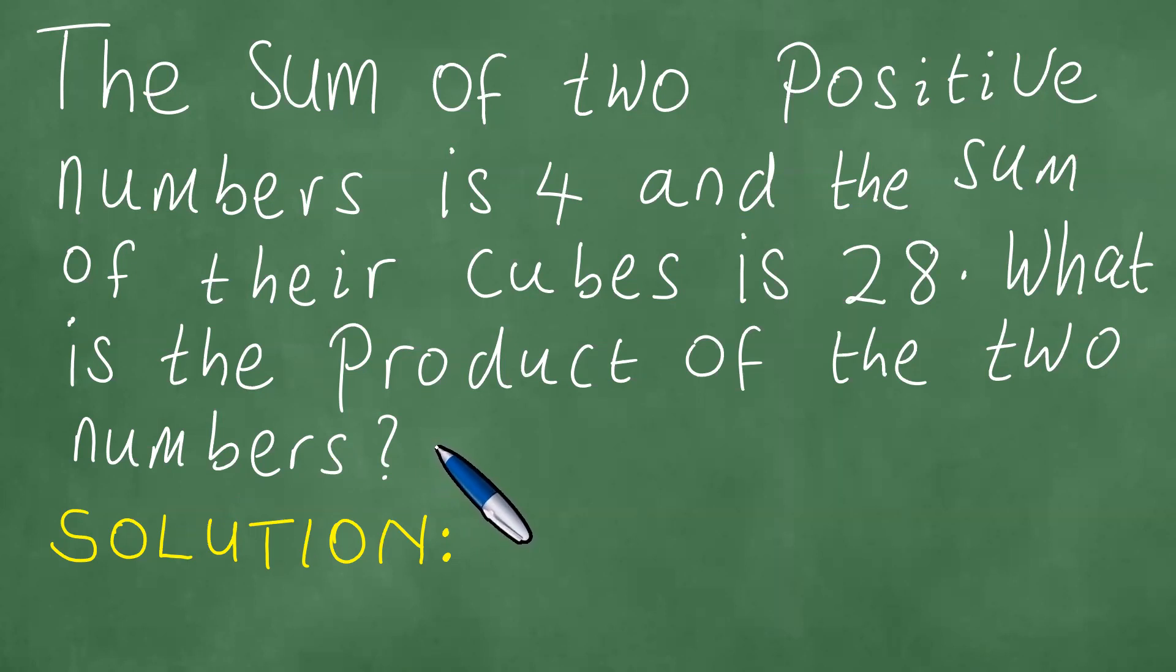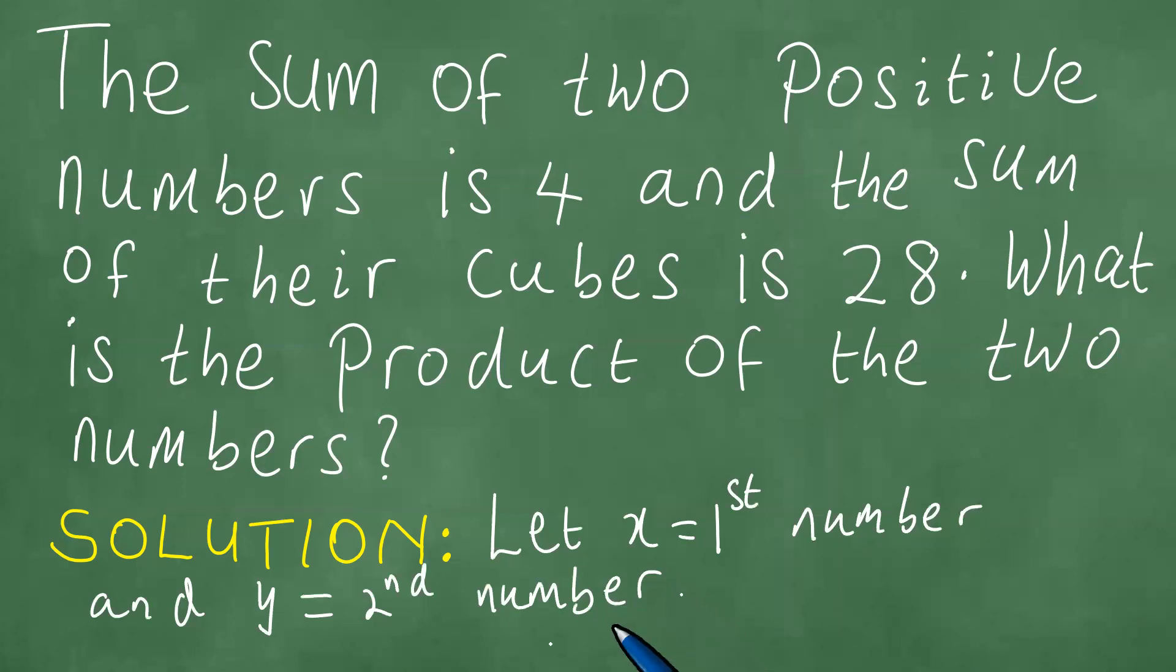To solve this problem in detail, there are a couple of things that we most certainly consider. In an attempt to find the product of the two numbers, one way to do that is to say let x be equal to the first number and y be equal to the second number. Remember, we are dealing with two numbers here.